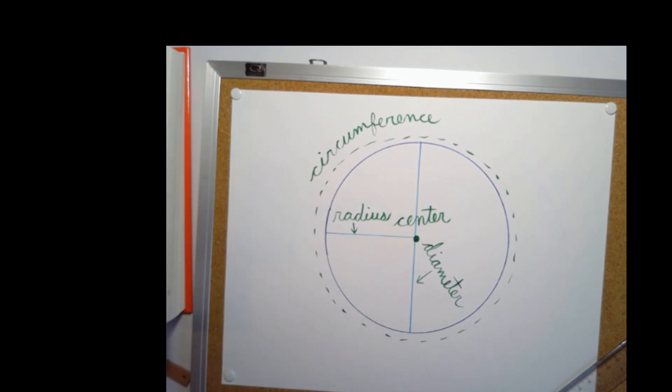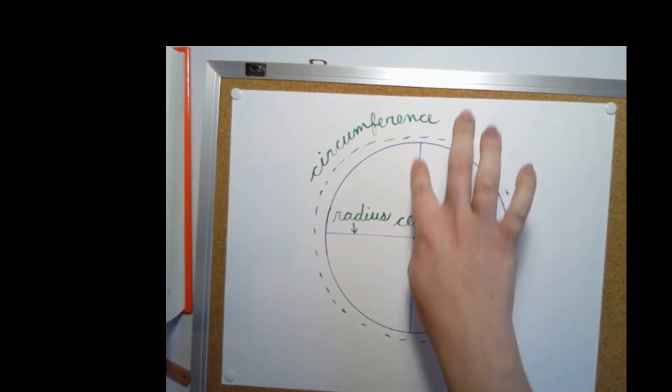So your follow-up work for this lesson is I have given you a circle and it has the center marked, but it does not have the circumference, a radius, or a diameter. So your job is going to be to use a ruler or a straight edge, just something that's nice and completely straight. A ruler is good because we know that it is straight. And you're going to draw in the radius and the diameter, or a radius and a diameter.